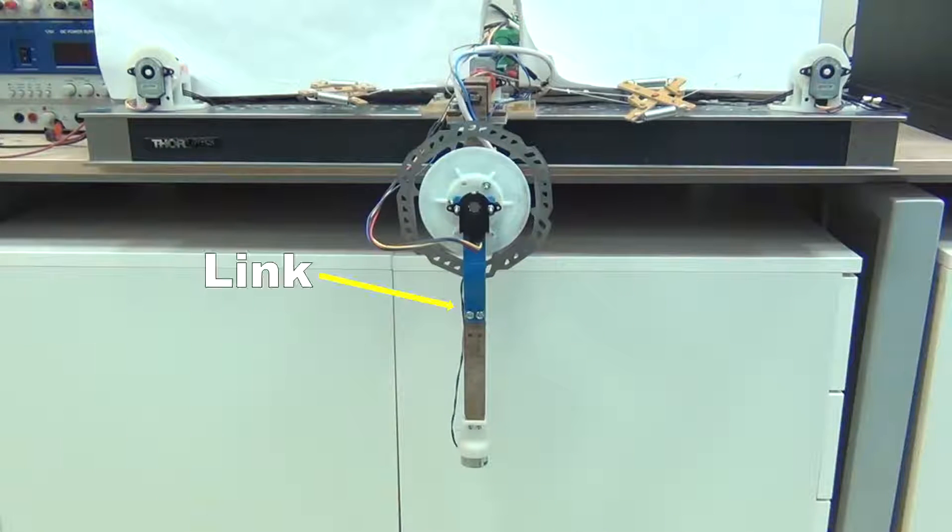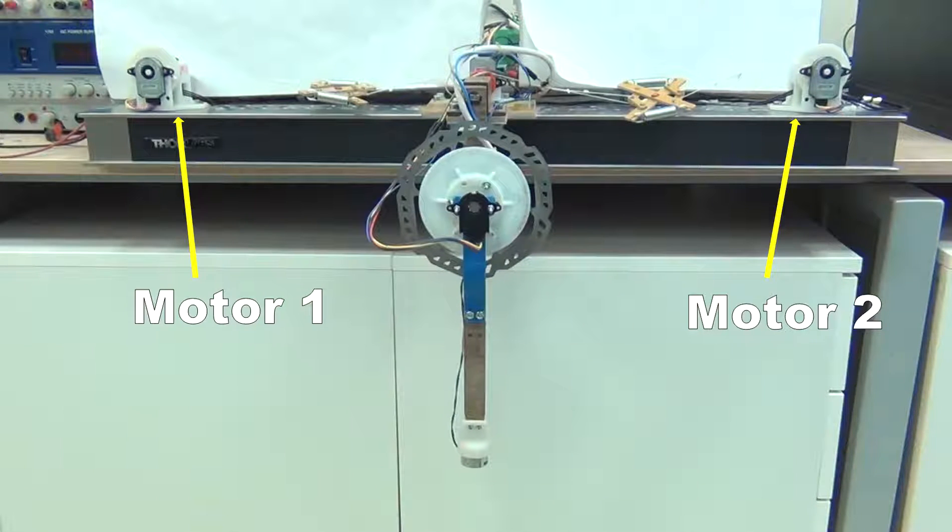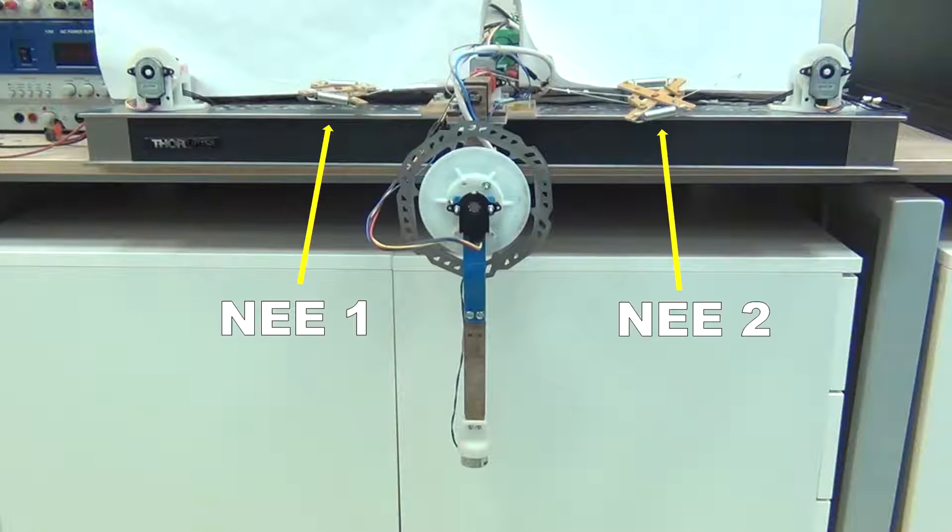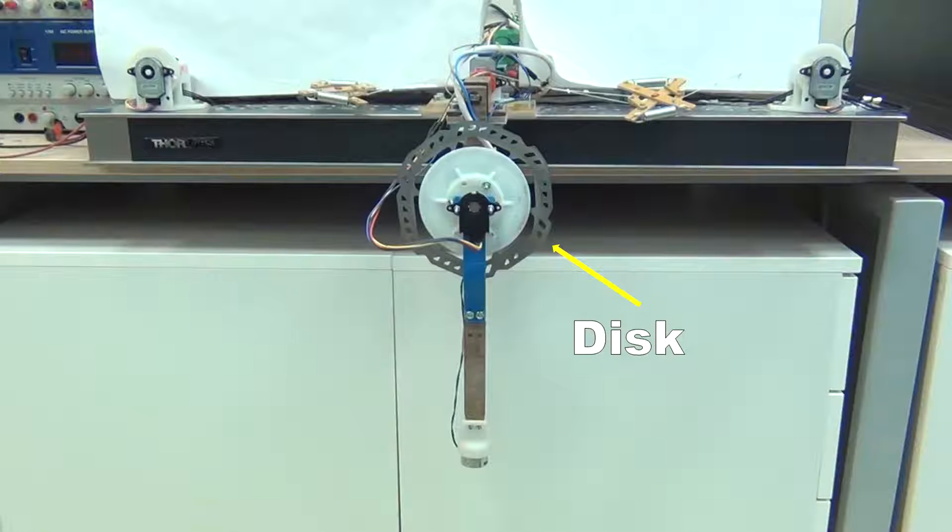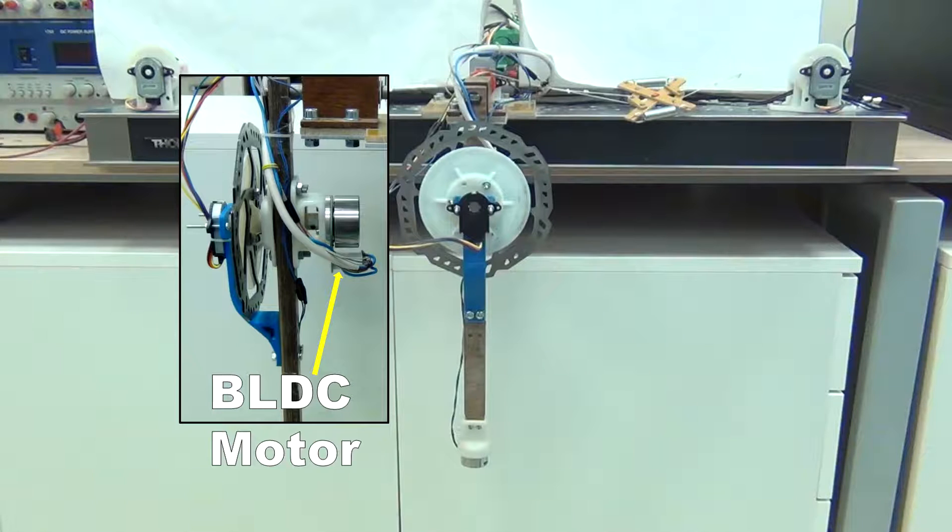The robot consists of one link, actuated by two servomotors, connected to the joint via two nonlinear elastic elements. The disk is attached to the link closer to the axis of rotation in order to minimize the link inertia.